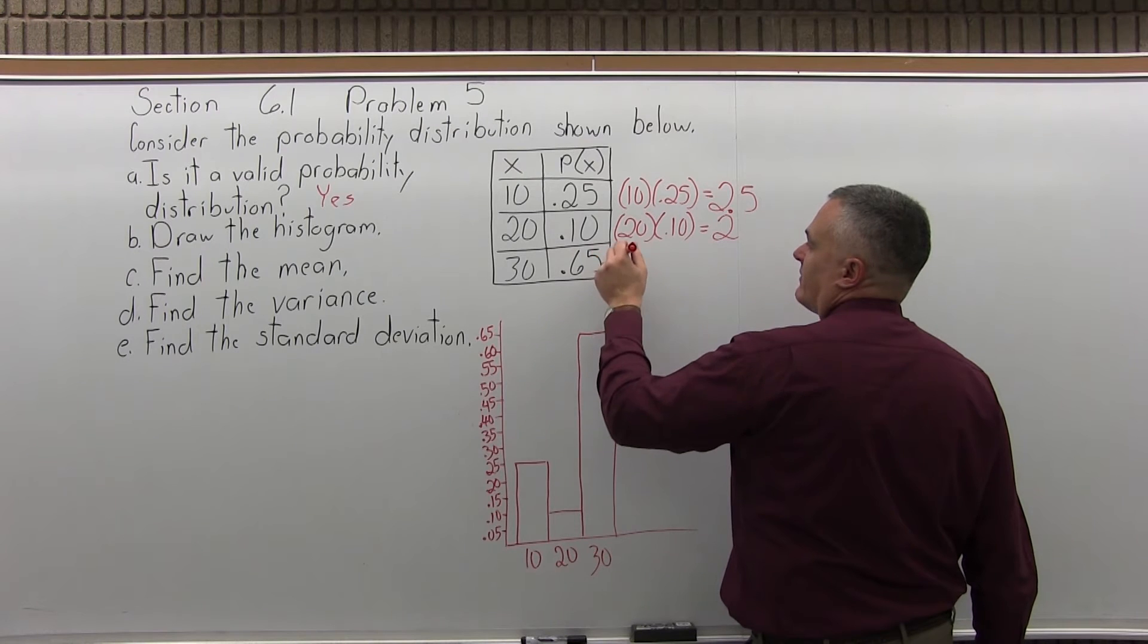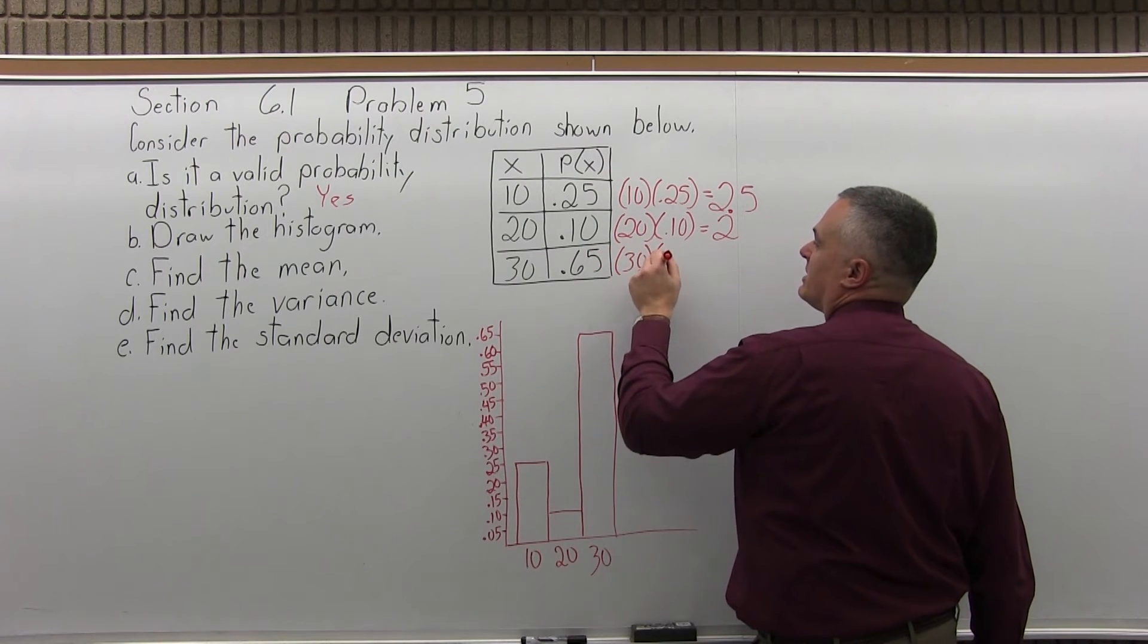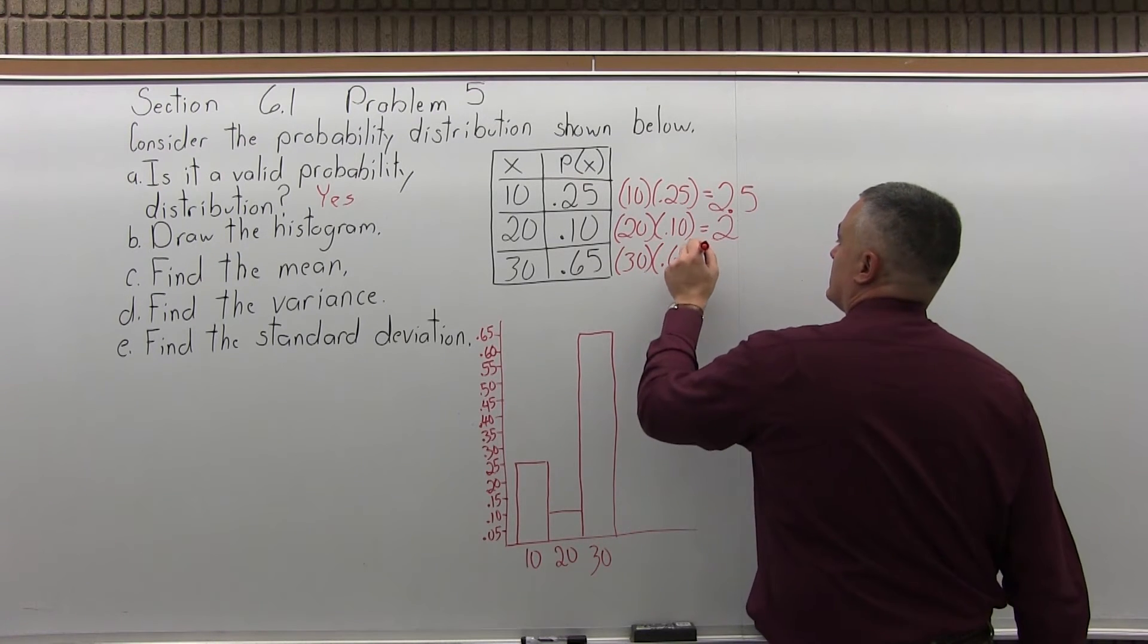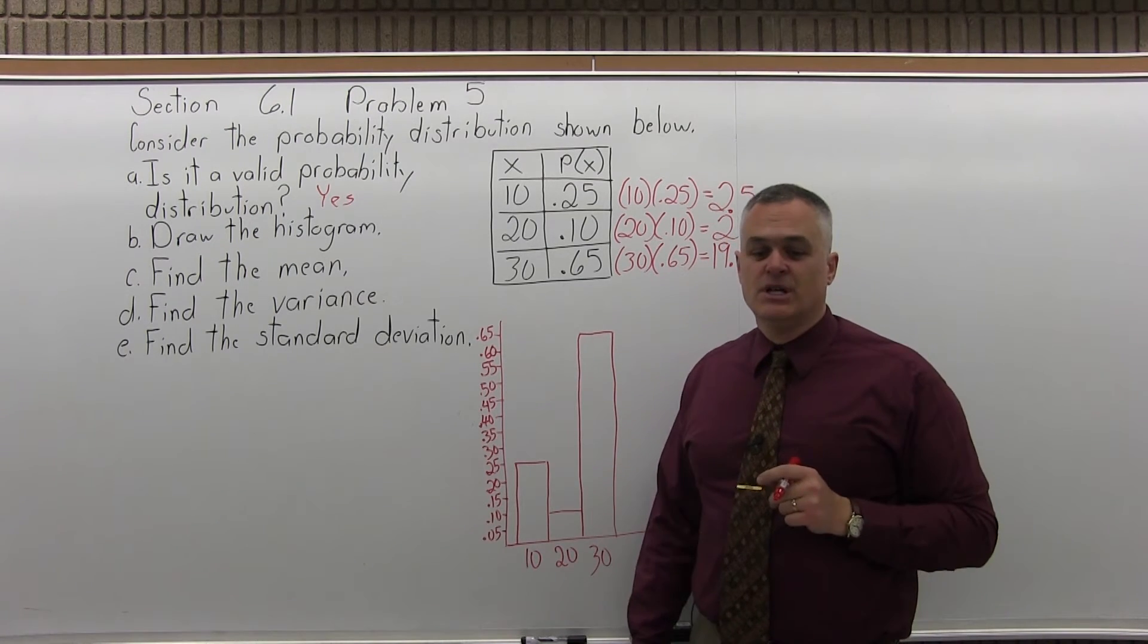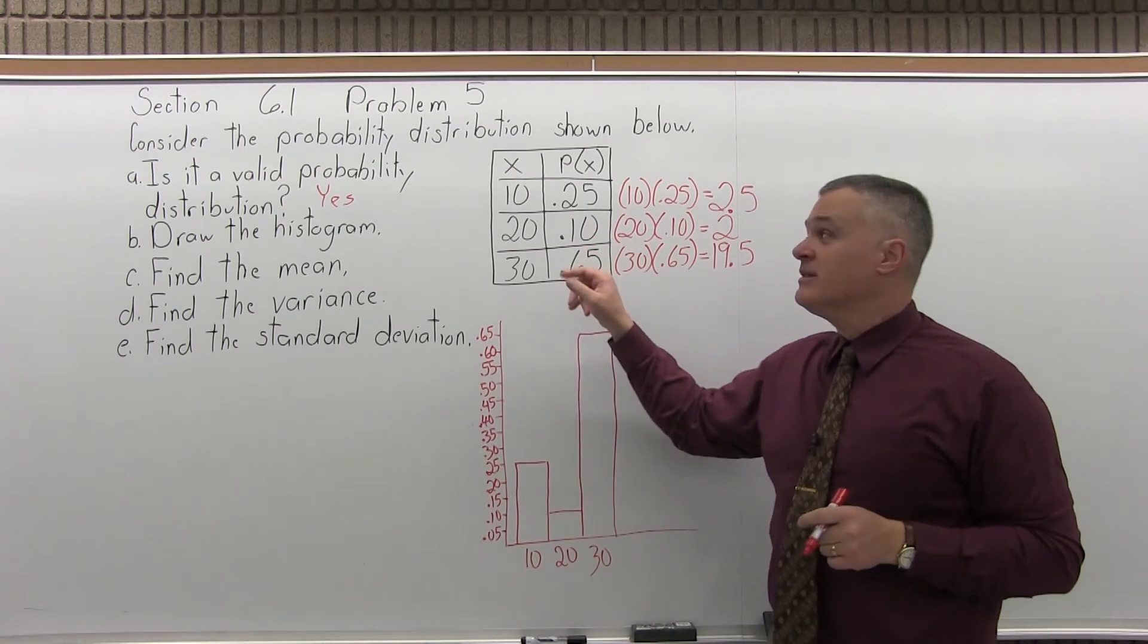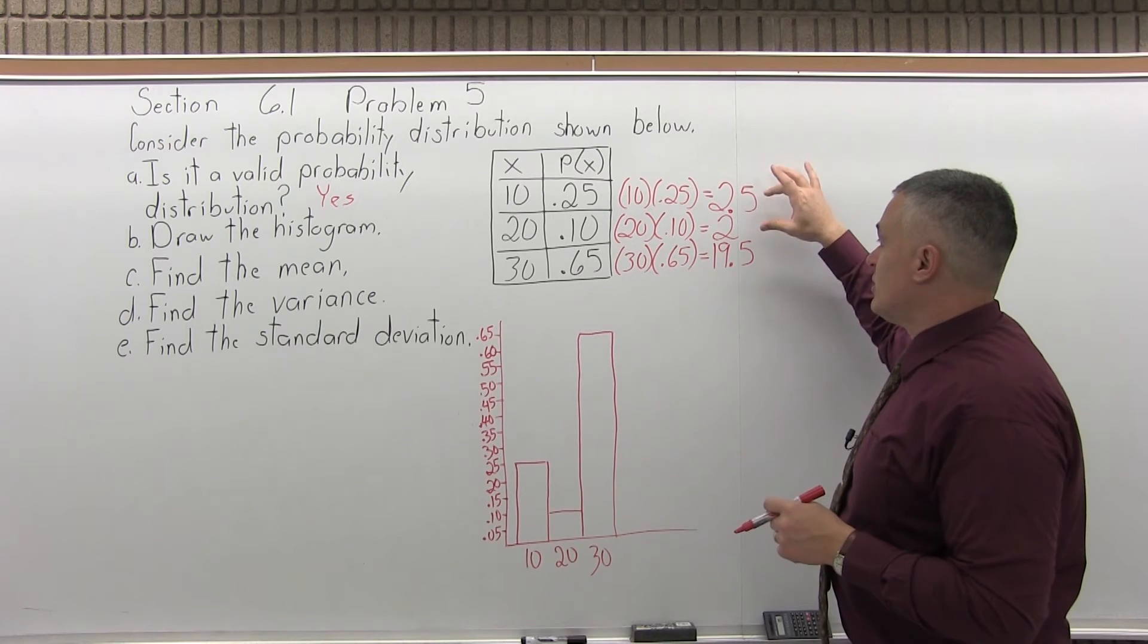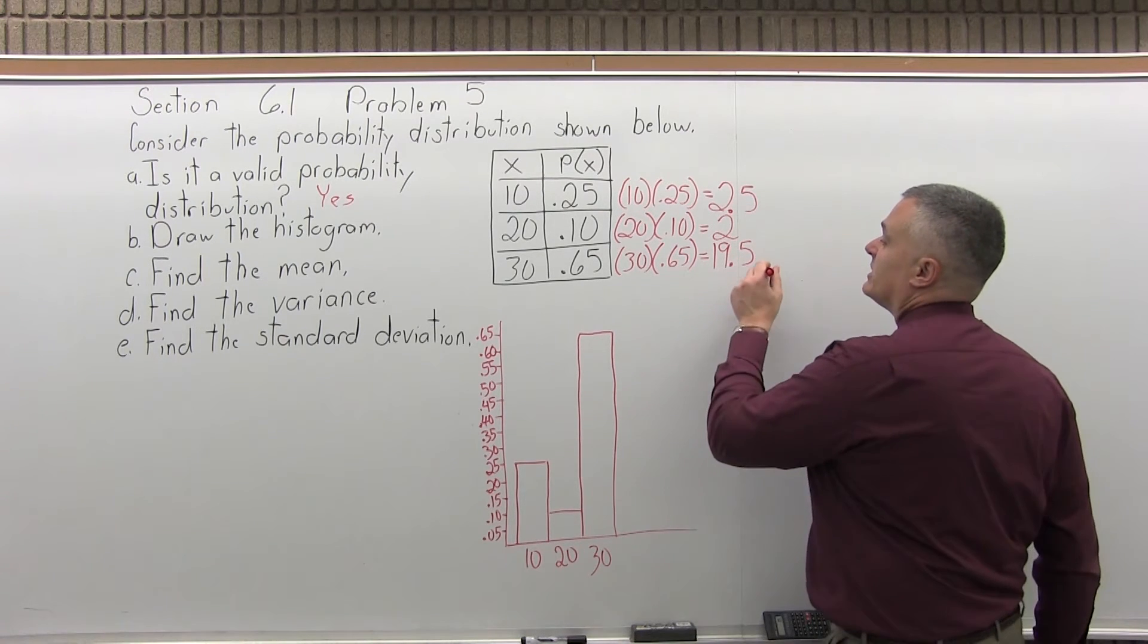And in the bottom, you're going to have the number from the first column is 30 times this probability is 0.65. And if you multiply 30 times 0.65, it's 19.5. So now that you've done every number in the first column times the probability, take the answers that you've gotten and add them together. So 2.5 plus 2 is 4.5. 4.5 plus 19.5 is 24.